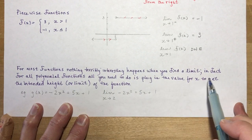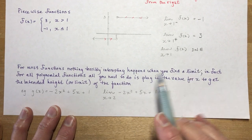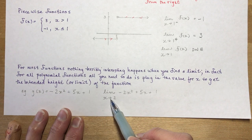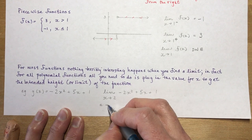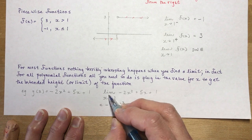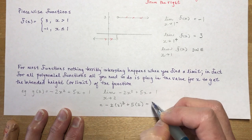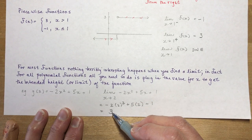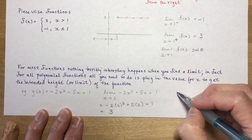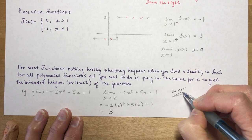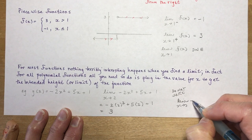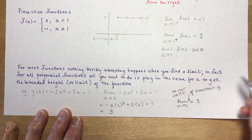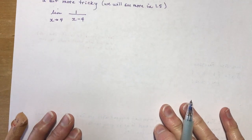For most functions — in particular all polynomial functions — nothing terribly interesting happens when you find a limit. All you need to do is plug in the value of x. For example, if g(x) = -2x² + 5x + 1 and we want the limit as x approaches 2, just plug in 2: that gives -8 + 10 + 1 = 3. Note that once you plug in, you no longer write the limit symbol.